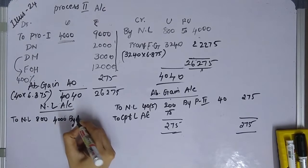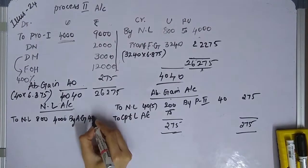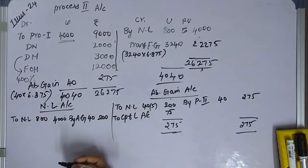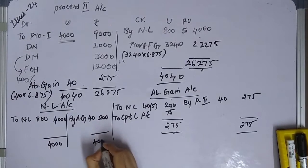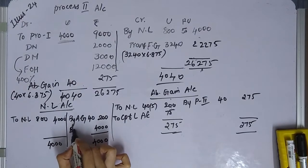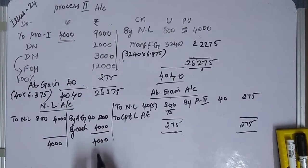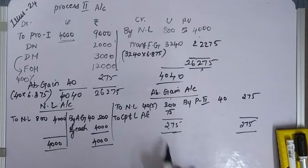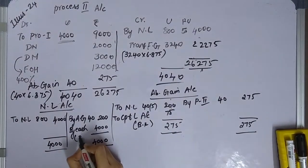By abnormal gain account: 40 units at 275 rupees. We post 40 units and 200 rupees for the scrap value, and 4,000 as the process account figure. The balance figure is nothing but the normal scrap value amount — this is the balancing figure for the abnormal gain account. Remember, the P&L account gets the constant balance as the balancing figure.